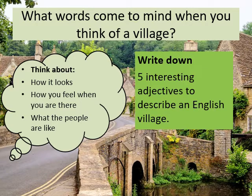Just to get us thinking about villages — what words come to mind when you think of a village? How does it look? The do now showed you what a village might look like. How do you feel when you're there? What are the people who live in a village like, and how might they be different to people who live in towns and cities? I want you to write down five interesting adjectives to describe an English village. An adjective is simply a word that describes a noun — a describing word. Then move the slide on.